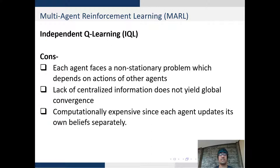Independent Q-learning faces a non-stationary problem wherein each agent's environment is continuously changing with respect to other agents' actions. Secondly, lack of centralized information in independent Q-learning does not lead to global convergence as there is no cooperation between agents.